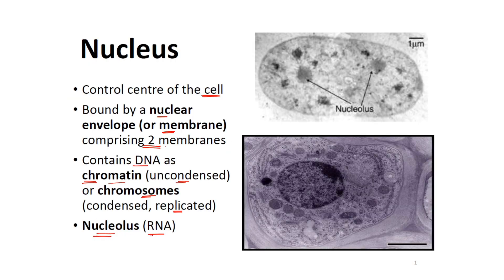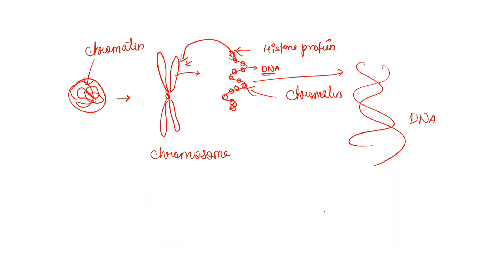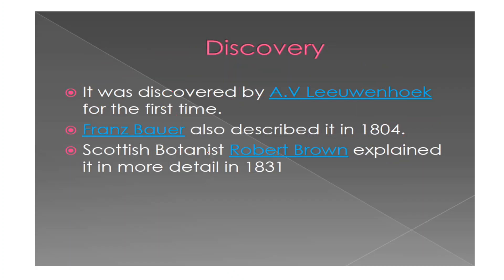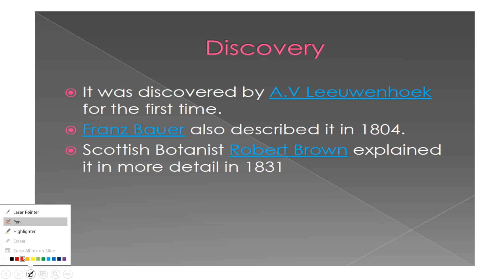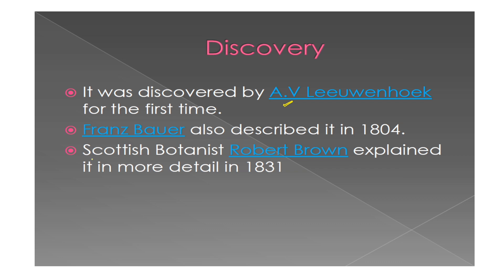The nucleus contains a nucleolus which has RNA. RNA is very important and is involved in protein synthesis. Regarding discovery: it was first observed in a living cell by Anton von Leeuwenhoek, then Franz Bauer described it in 1804. The Scottish botanist Robert Brown explained it in detail in 1831, so the credit for the discovery of the nucleolus goes to Robert Brown.